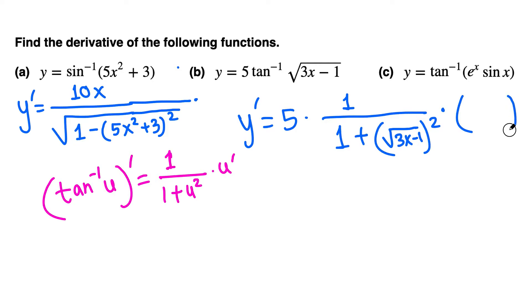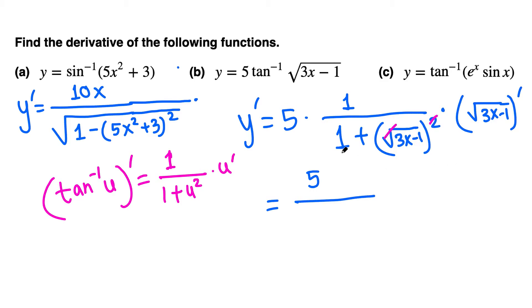In the next step, the 5 is on top, so we have 5 over the denominator. We can simplify: 1 plus 3x minus 1 — the 1 minus 1 cancels — leaving just 3x. So we now have 5 over 3x, times the derivative of square root of 3x minus 1.